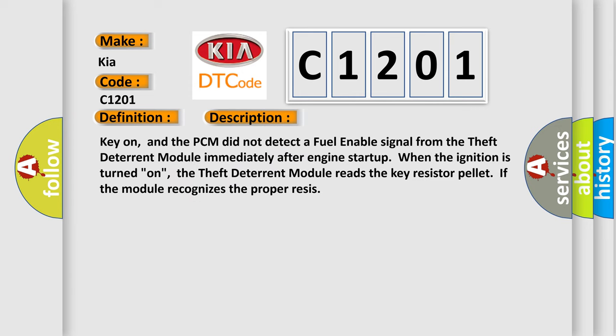Key on, and the PCM did not detect a fuel-enabled signal from the theft deterrent module immediately after engine startup. When the ignition is turned on, the theft deterrent module reads the key resistor pellet if the module recognizes the proper resistance.